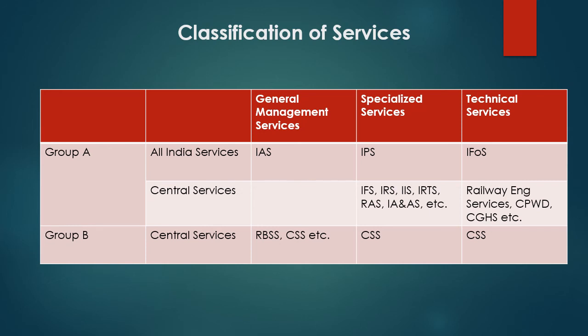Within Group A Gazetted Officer, Central Services include Indian Railway Service, Indian Foreign Service, and Indian Accounts Services. Technical departments such as Railway Engineering, CPWD (Central Public Works Department), and Health are also included. There are more than 50 technical departments in the Group A category.